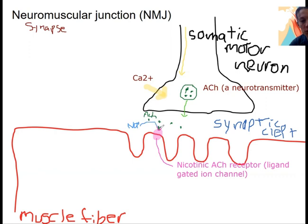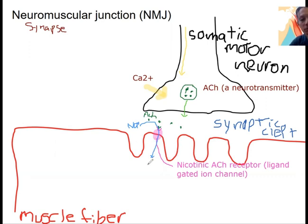Sodium is going to flow into the cell because there's a huge drive for sodium to move inside the cell. When sodium moves inside the cell, if enough moves in — if threshold is reached — an action potential can be generated in the muscle cell. This action potential is due to the opening of voltage-gated sodium channels in response to this initial stimulus, just like we had with the neuron.